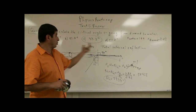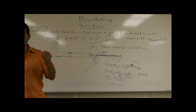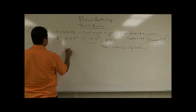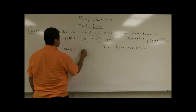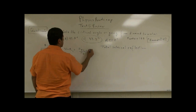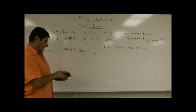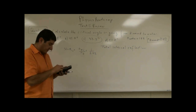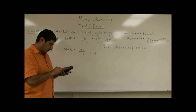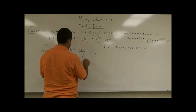Total internal reflection is also the theory behind why diamonds sparkle so well. The critical angle for diamond is the index of refraction of air over the index of refraction of diamond — approximately 1 divided by 2.42. Taking the inverse sine of that gives us 24.41 degrees.